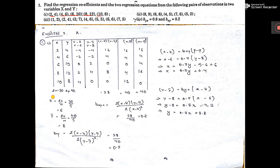Here it is not written, so you write n equal to 5. Then the formula: x̄ is equal to summation x by n. Put summation x — got 30 — by n which is 5. So x̄ is 6, that is the mean of x is 6. And ȳ equals summation y by n, so ȳ is 8.